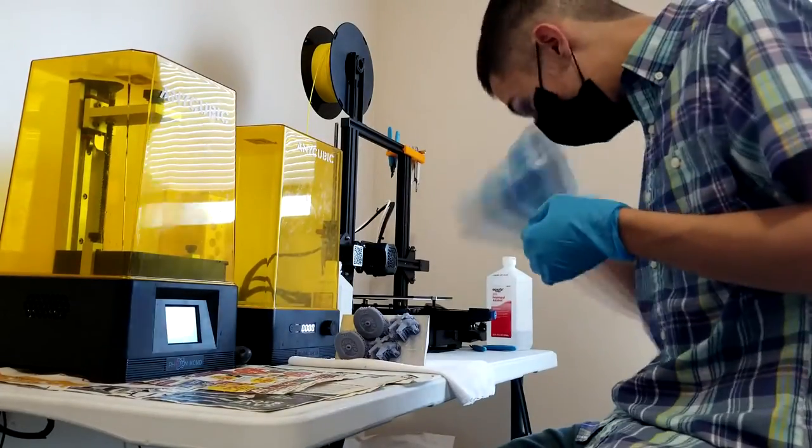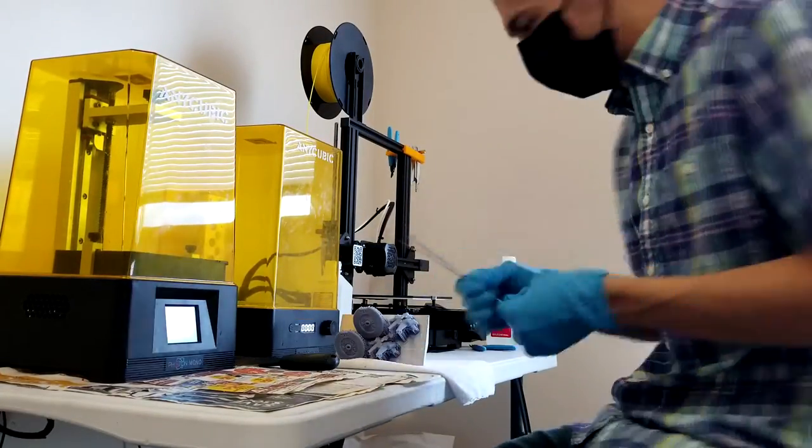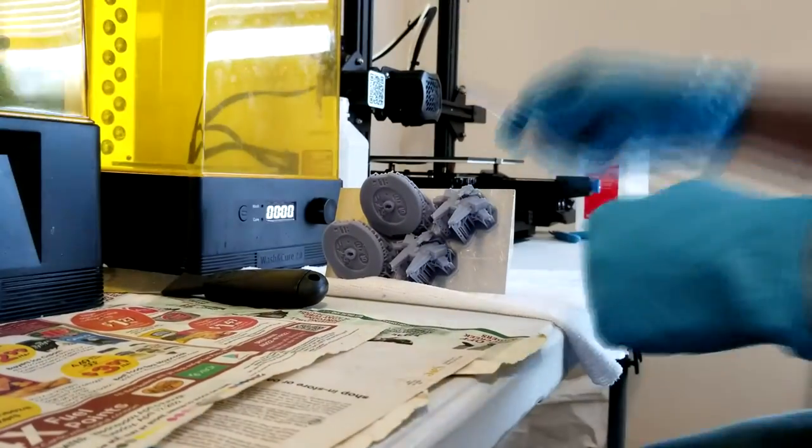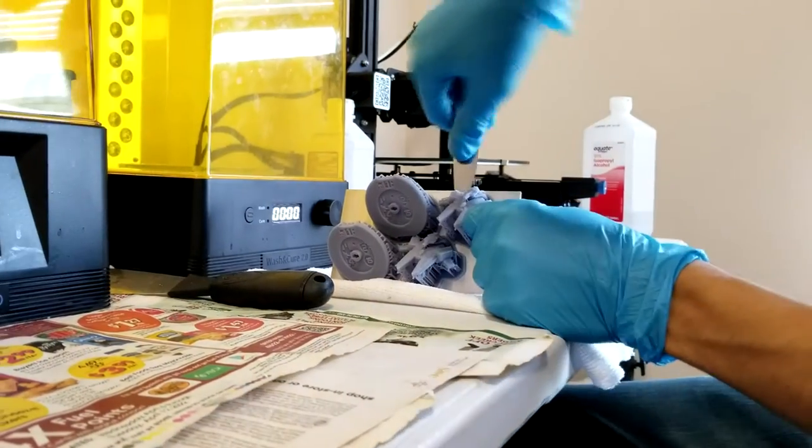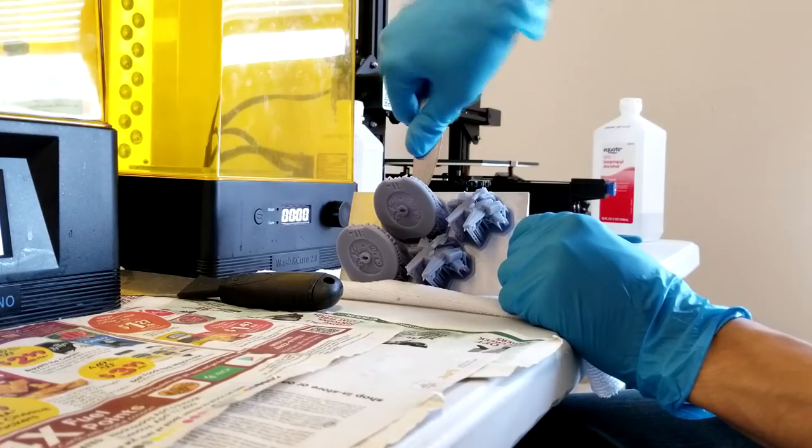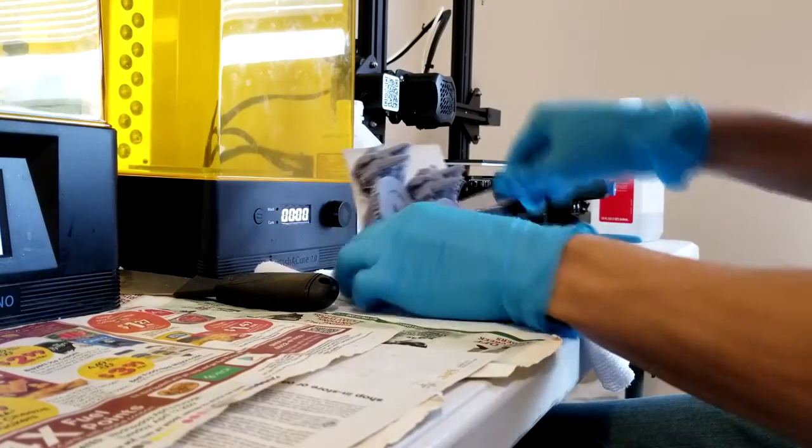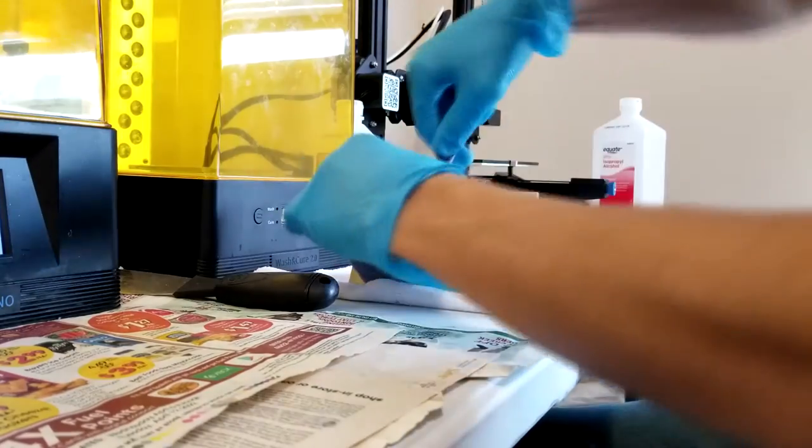Now the models are dry. So I'm going to pop them off with what? A butter knife. Yeah, I found recently it actually works a lot better, at least when the print has the angled support base from Lychee Slicer, because I can just put some upward force at the base of the print and the print pops off without scratching the build plate.